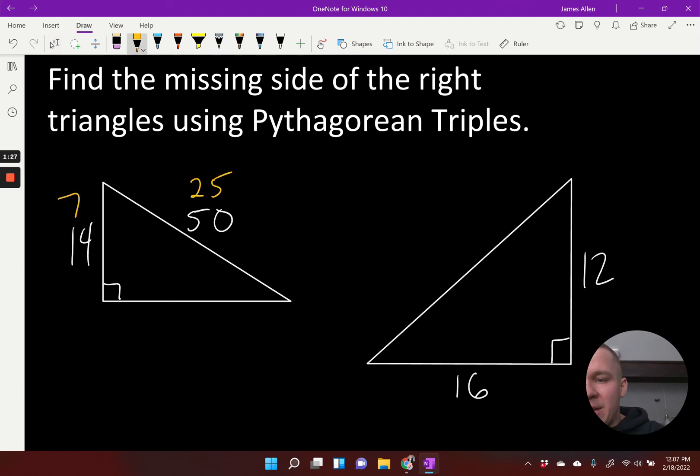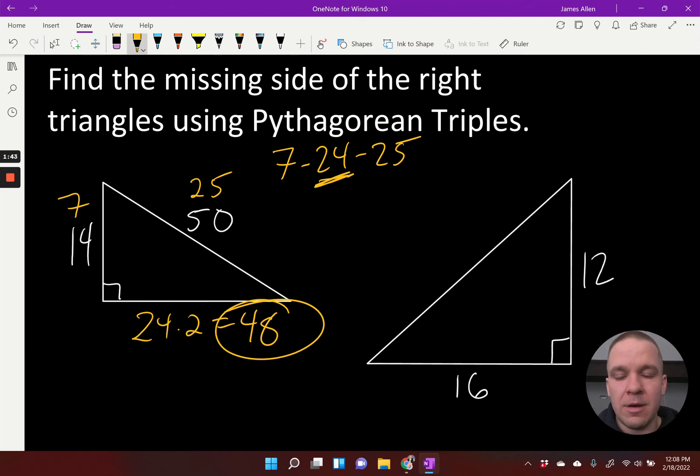I'd end up with 25 and I'd end up with 7. That would be my 7, 24, 25 triangle, but it's been doubled. So which side's the missing one? That 24 there. So 24 times 2 is going to give me 48. 48 would be my answer for that one.